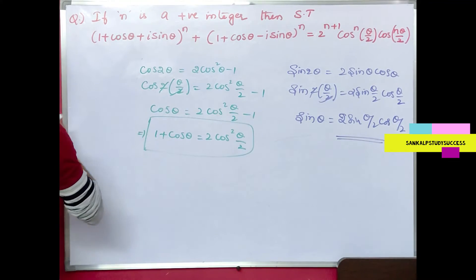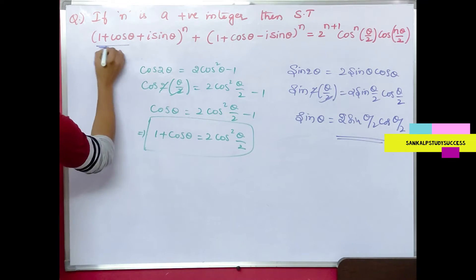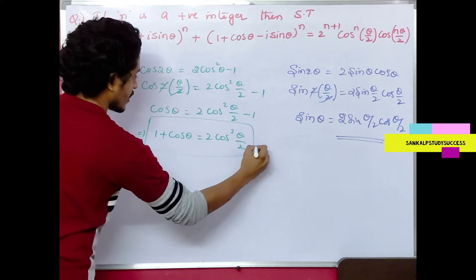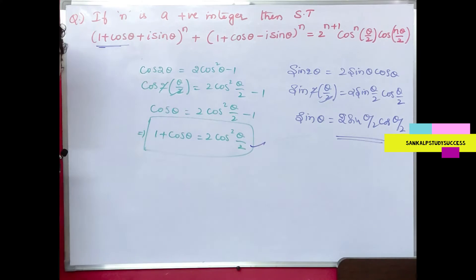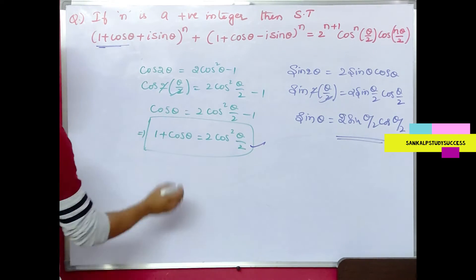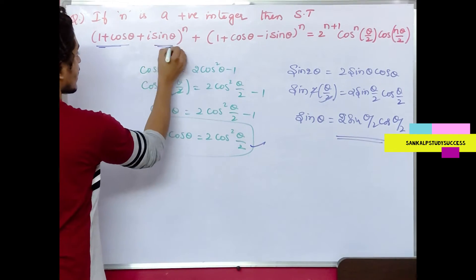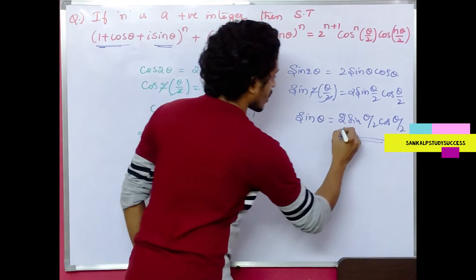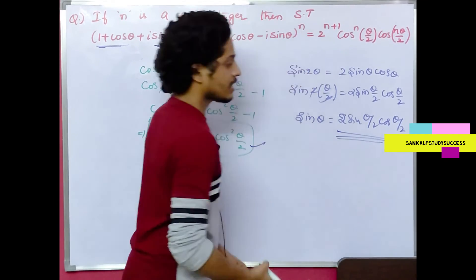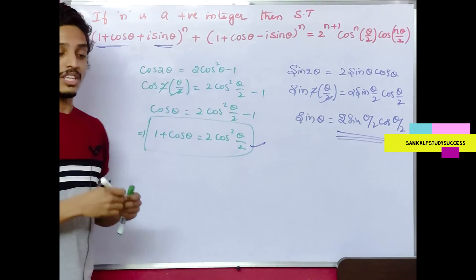So, if we replace 1 + cosθ with 2cos²(θ/2) and sin θ with 2sin(θ/2)cos(θ/2), that is the key substitution logic for solving this question.